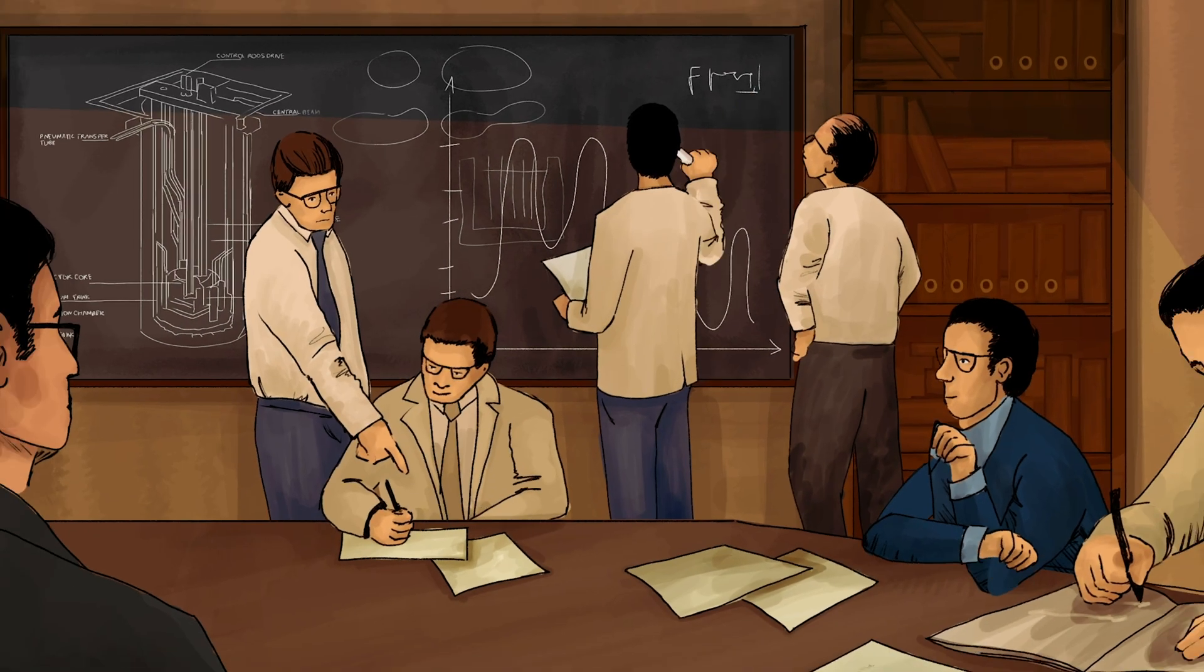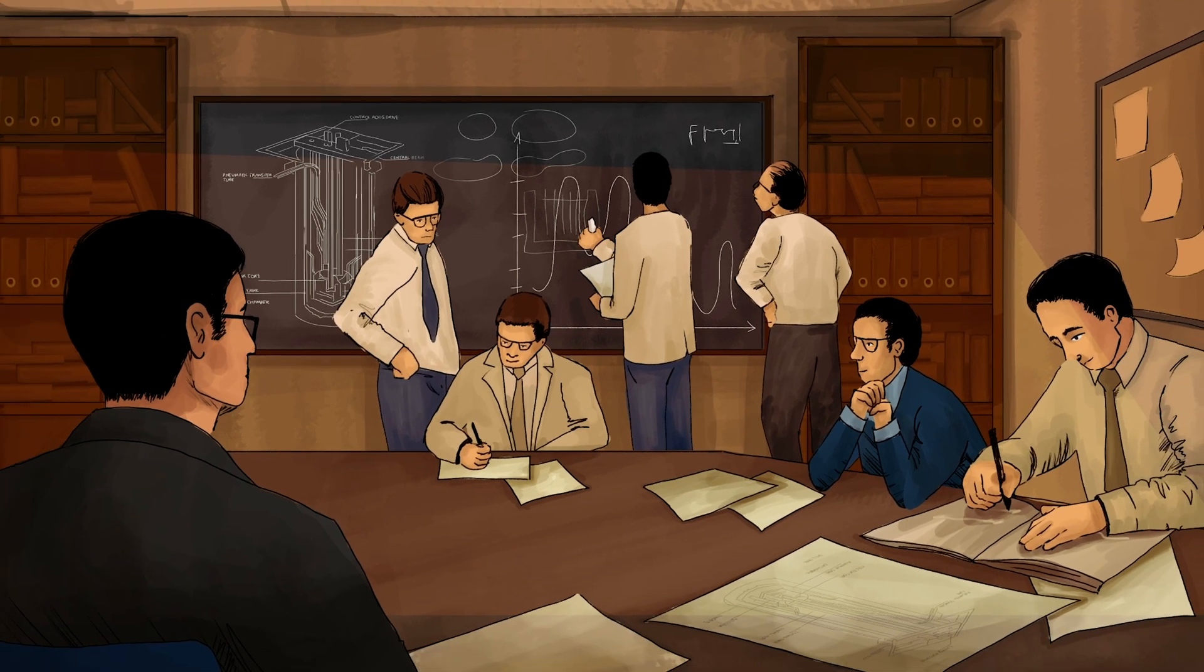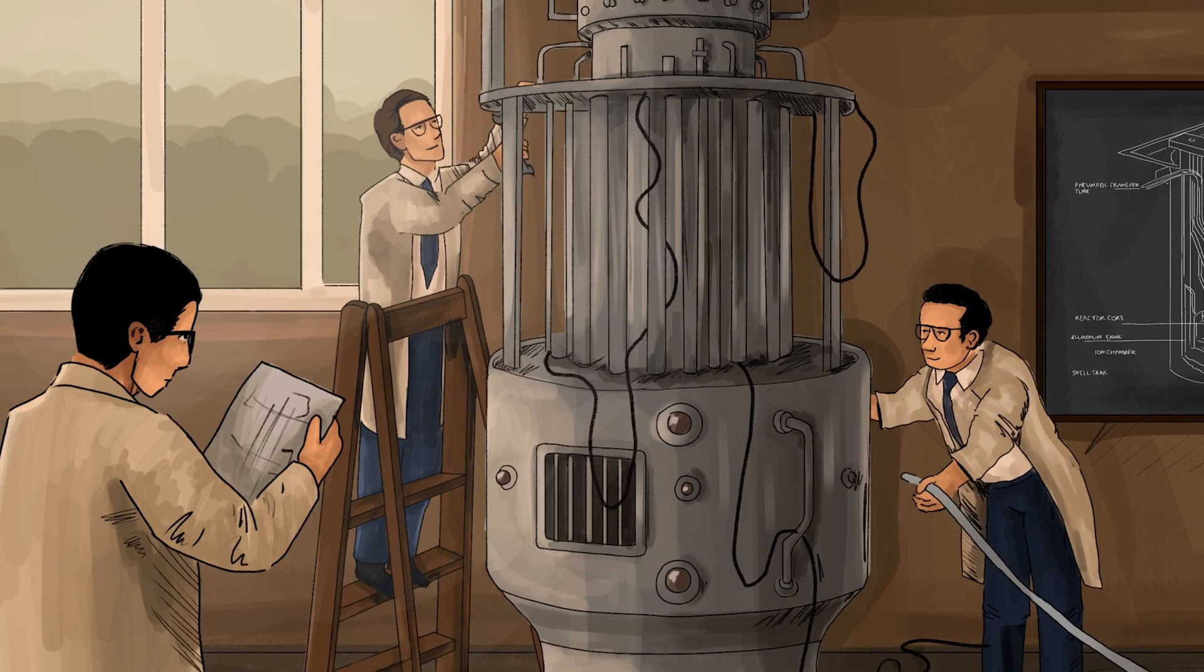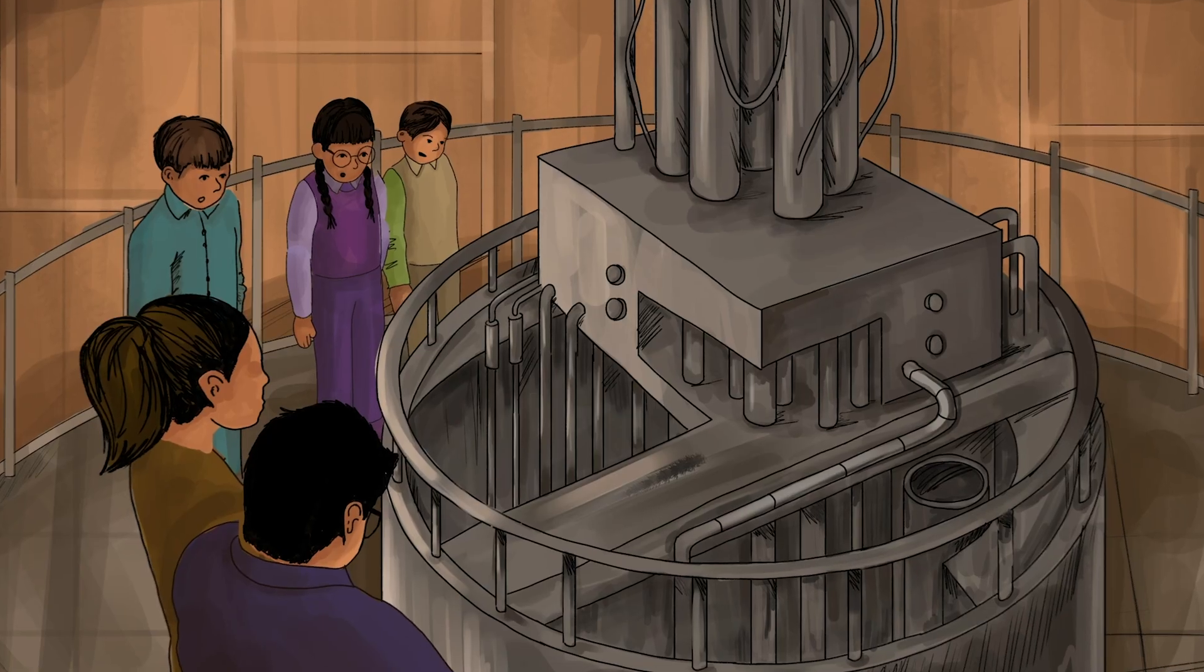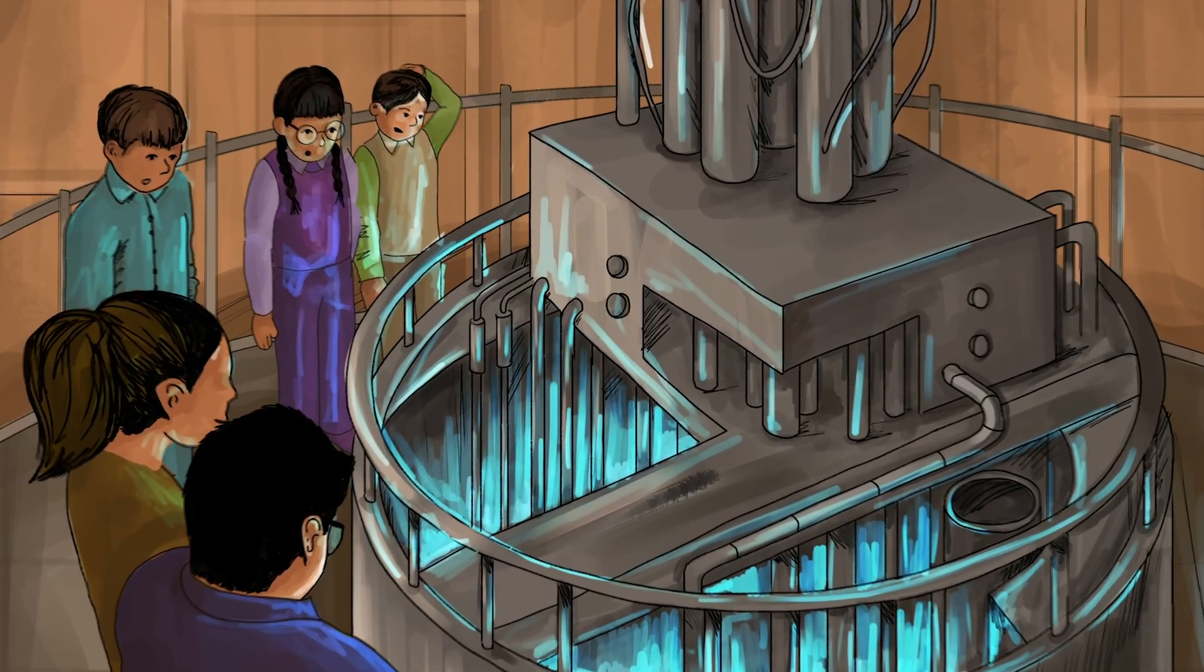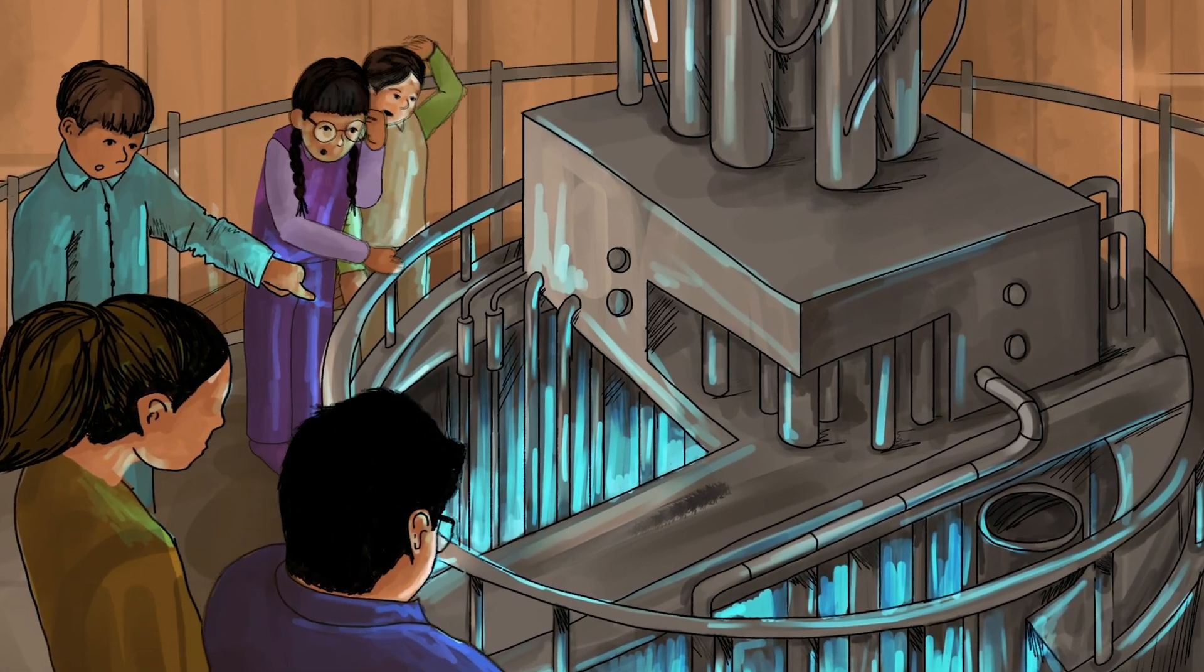In 1956, a group of nuclear scientists gathered to attempt to achieve the impossible. Their goal? To invent a nuclear reactor so safe that it could be given to a group of high school children to play with without any fear that they would get hurt.